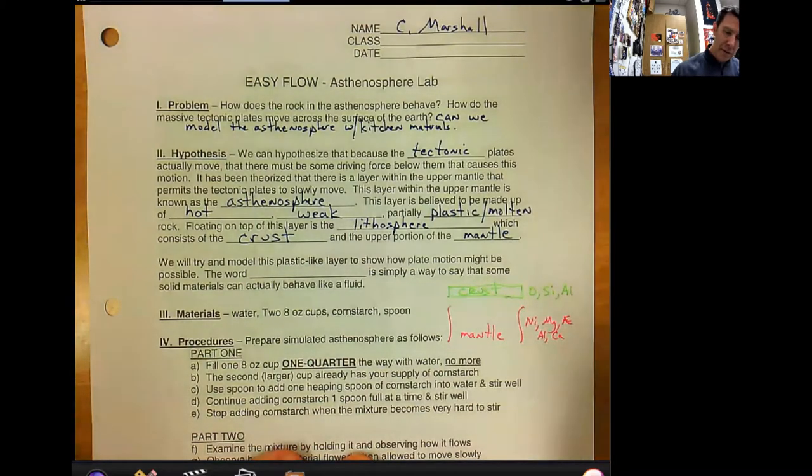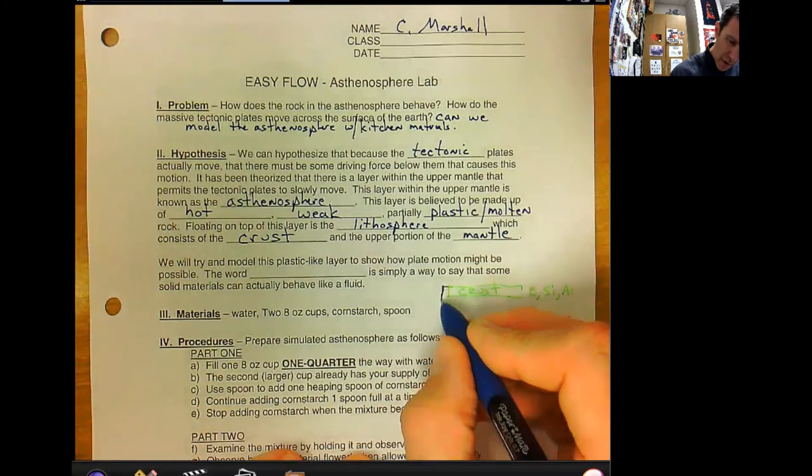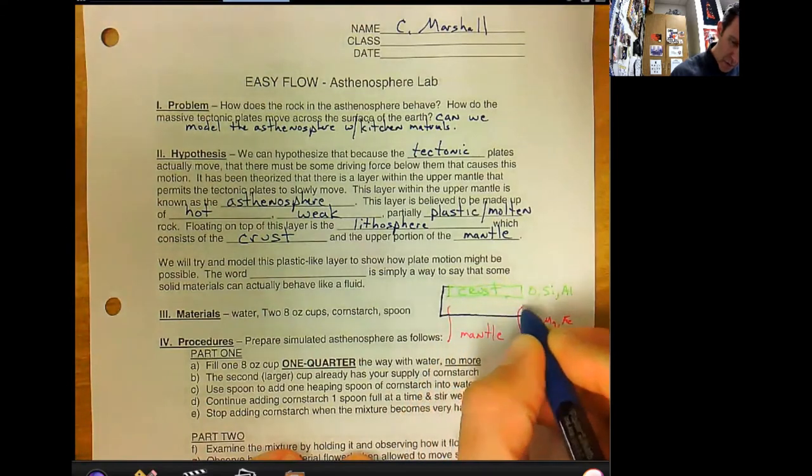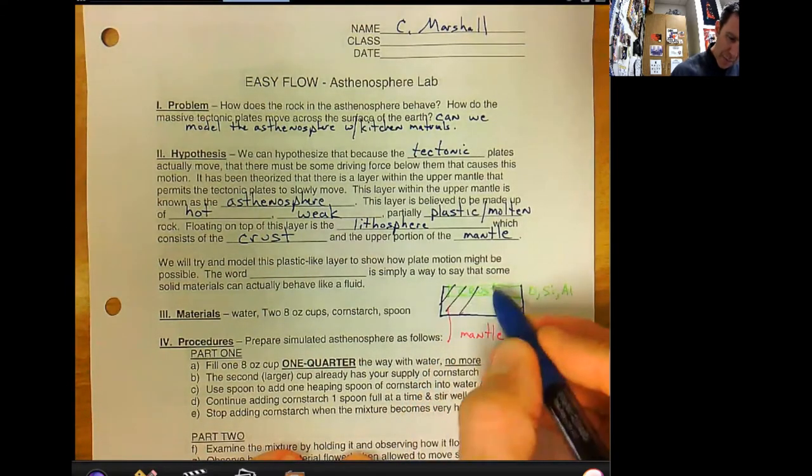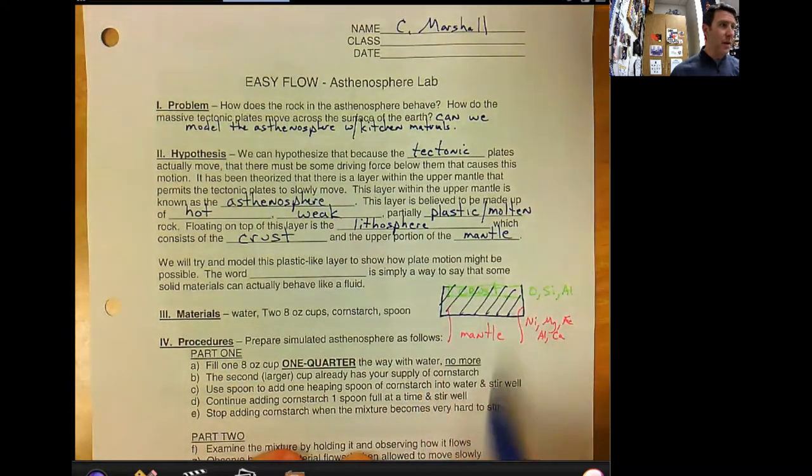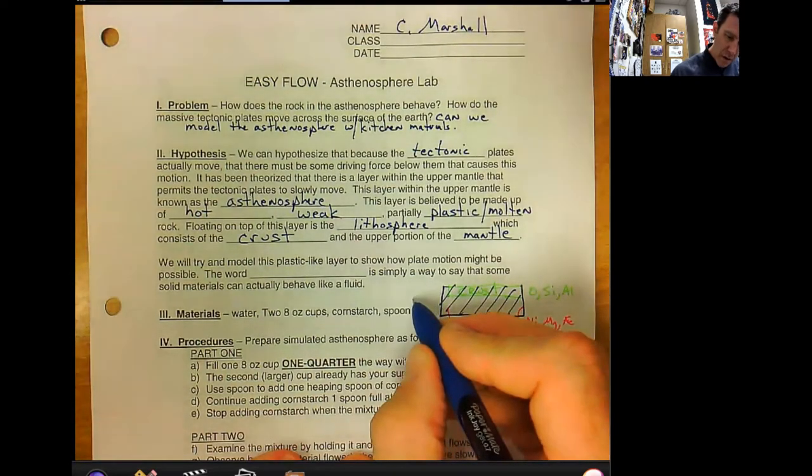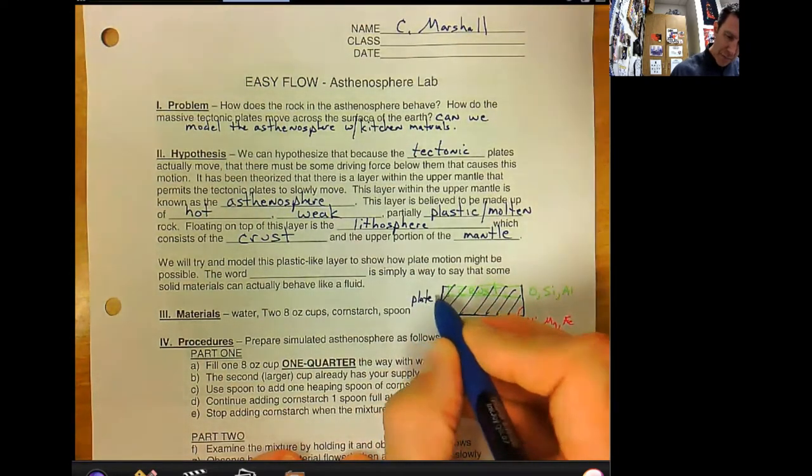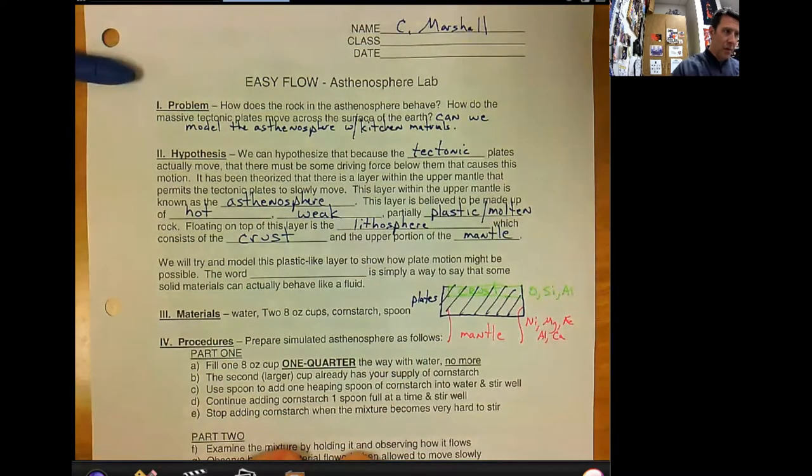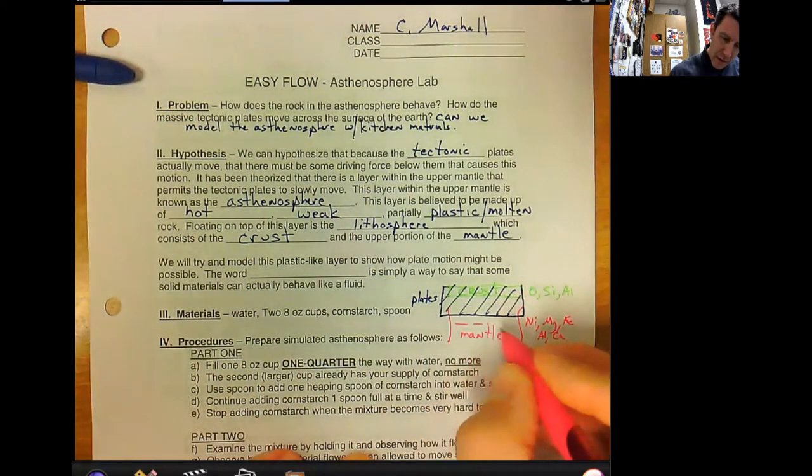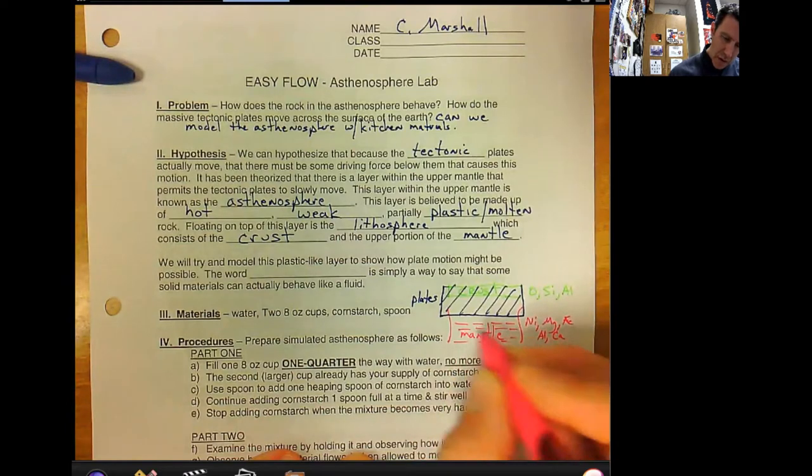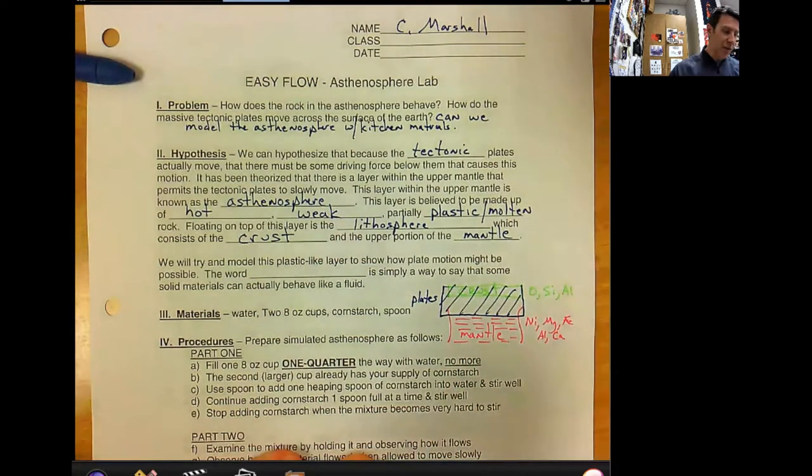Then the overlap: actually the crust and the upper portion of the mantle, these together, these are the plates. And below them is the plastic-like part of the mantle known as the asthenosphere, down below.